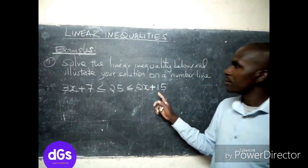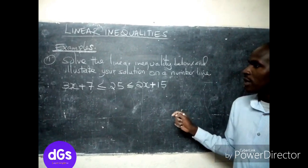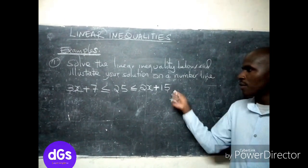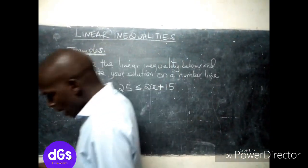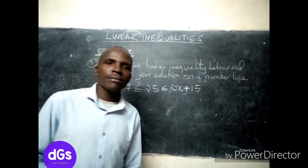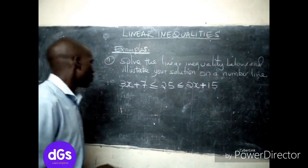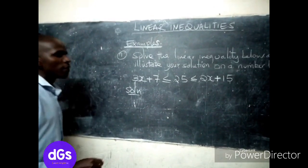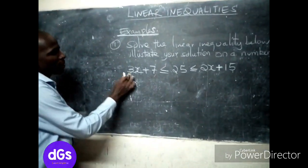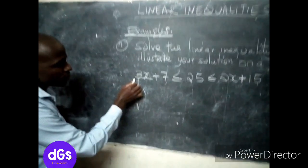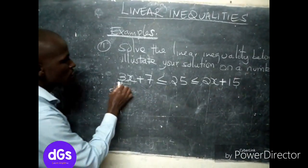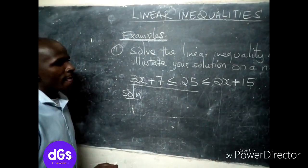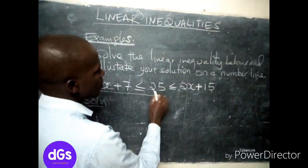In my first example I've picked this problem: solve the linear inequality below and illustrate your solution on a number line. When you are given such a problem, what do you do? How do you solve it? You begin by picking the inequality and solving it piecewise — you solve this part first and then you solve the upper part.